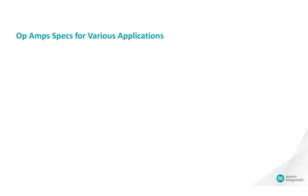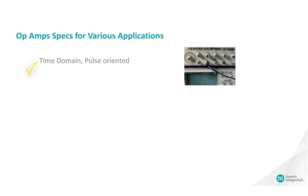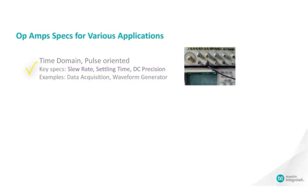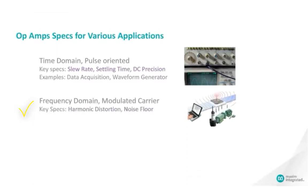Some additional specifications must also be considered for certain applications. For time domain pulse-oriented applications, key specifications include the slew rate, settling time, and DC precision. Some examples are data acquisition and waveform generation in instrumentation. For frequency domain modulated carrier applications, it's important to consider harmonic distortion and noise floor. Some examples are wireless communications and base station applications.